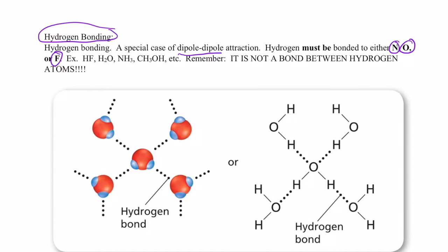So if I have a molecule like HF, H₂O, NH₃, or CH₃OH — where hydrogen is directly bonded to nitrogen, oxygen, or fluorine — we can form a hydrogen bond with another neighboring molecule. Please remember, it is not a bond between hydrogen atoms.